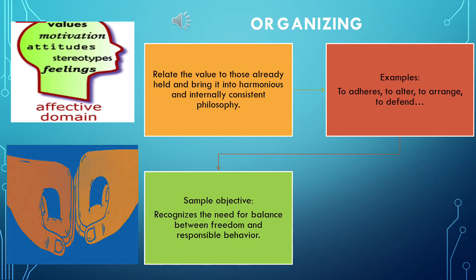Next is organizing. In organizing, the student relates a value to those already held and brings it into a harmonious and internally consistent philosophy. The student organizes values into priorities by contrasting different values, resolving conflicts between them, and creating a unique value system. The emphasis is on comparing, relating, and synthesizing values. The verb examples are: to adhere, to alter, to arrange, to combine, to complete, and so on. An example is that the student recognizes the need for balance between freedom and responsible behavior, or accepts responsibility for one's own behavior.